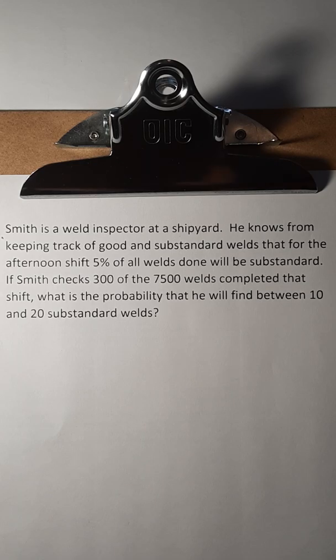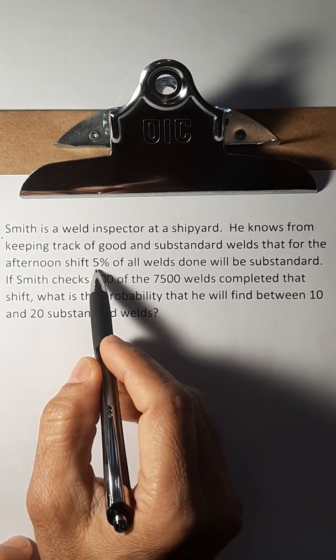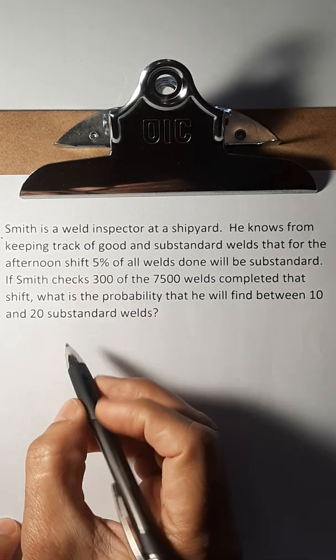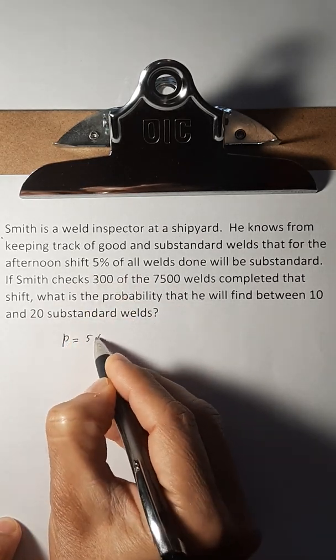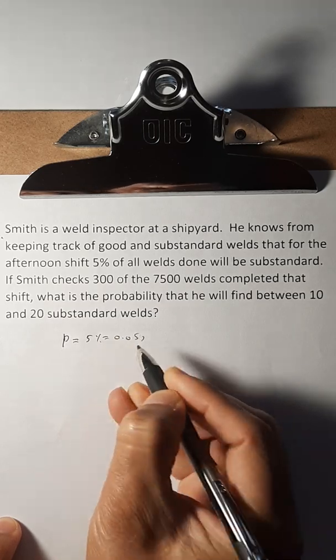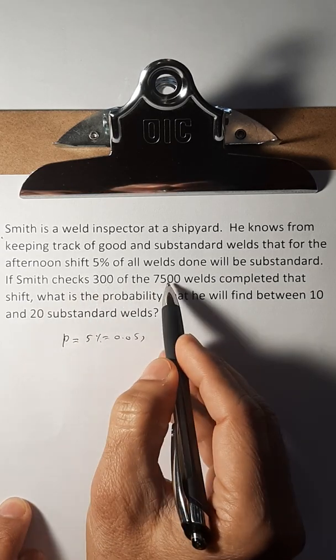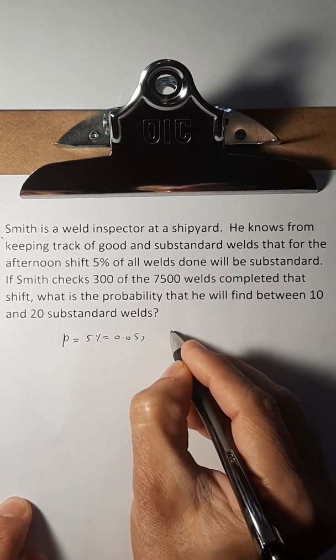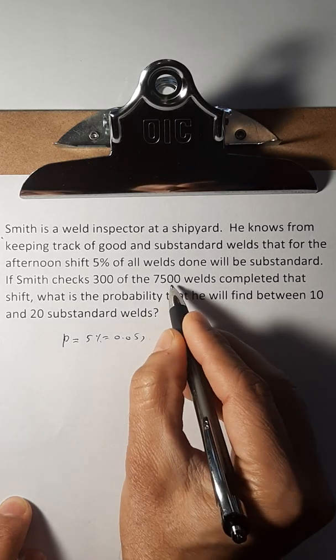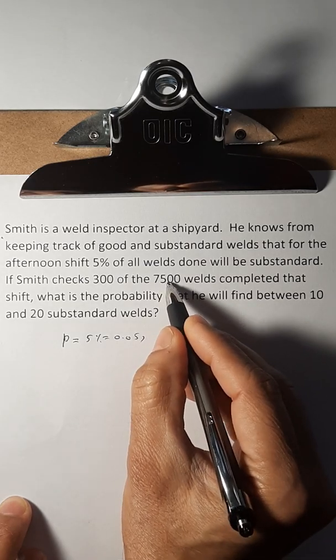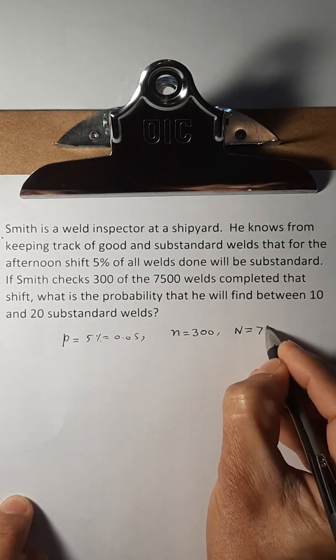Let's extract the information first. He knew that 5% of the welds would be substandard, so that's P, the probability or proportion of substandard welds: 5%, which equals 0.05. And then he is checking 300 of those welds, so out of 7500. We would say that lowercase n, our sample size that he picks, is 300. And the total welds done are 7500, so that's the population size, uppercase N equals 7500.